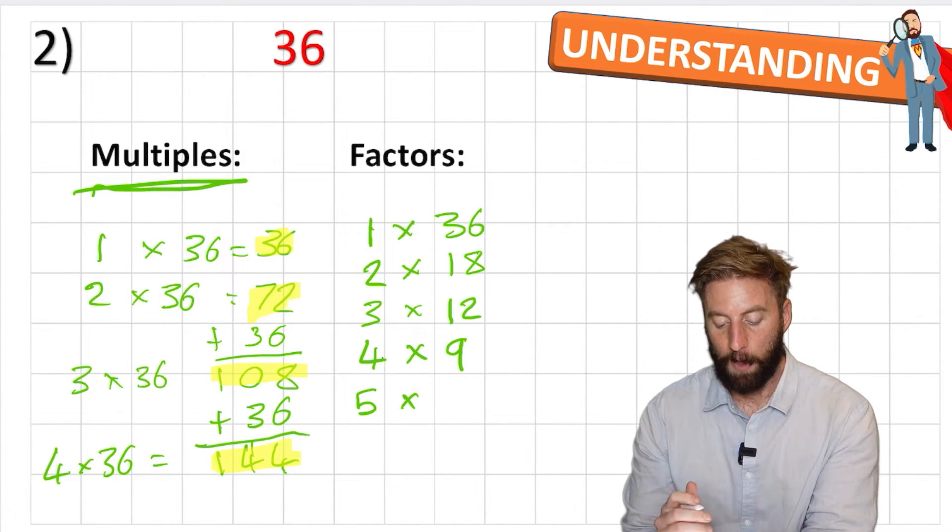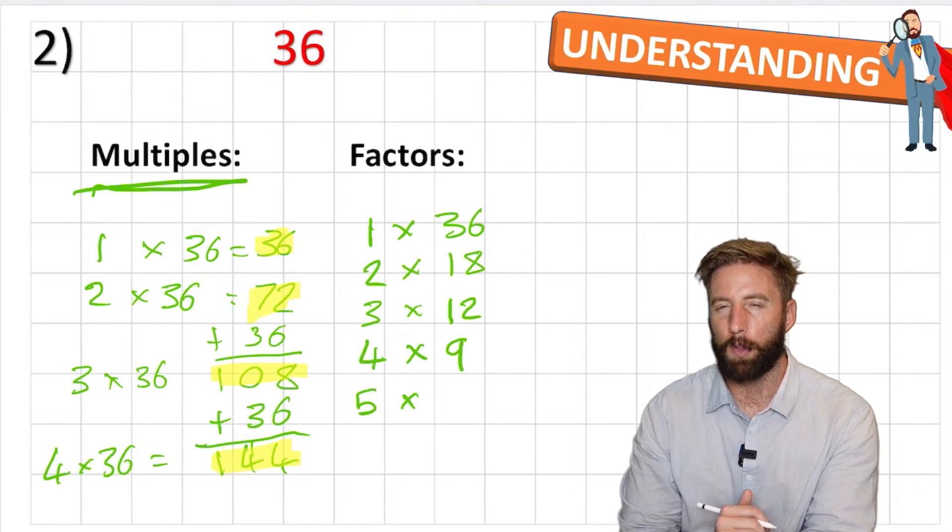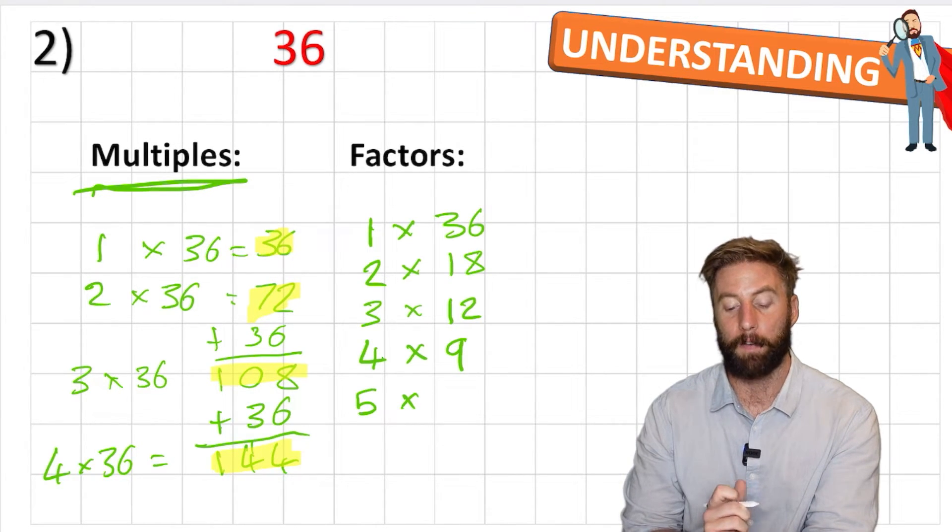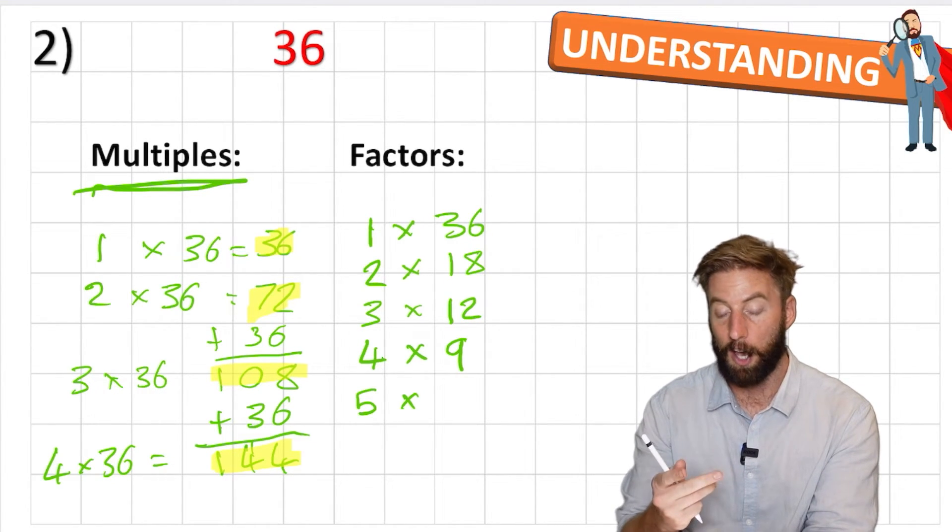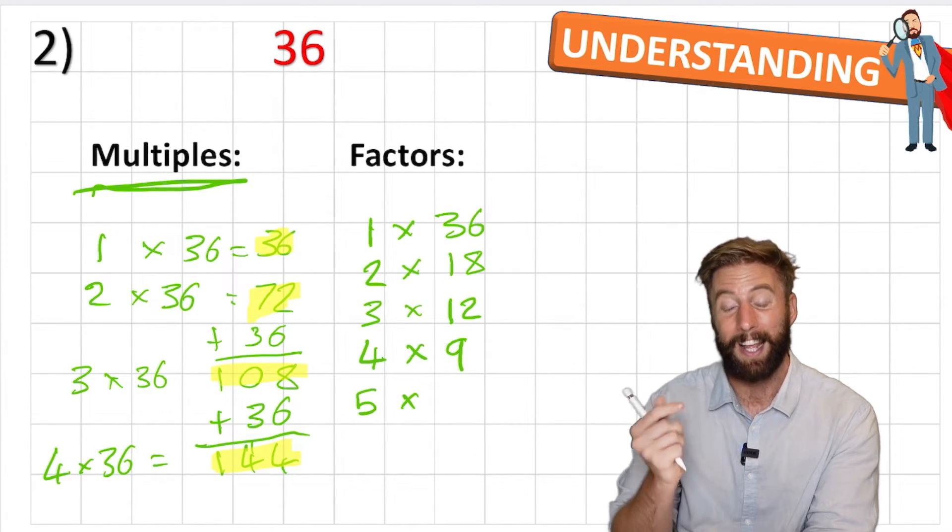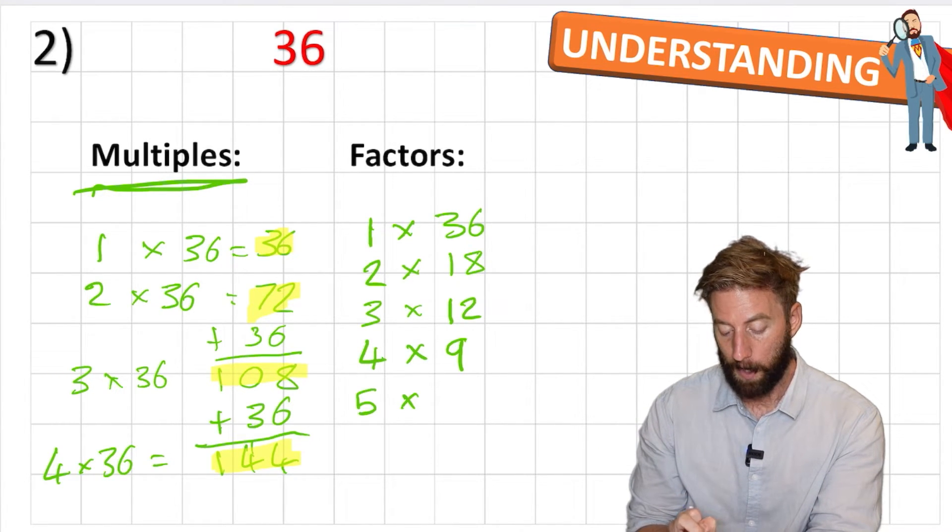Okay, let's check 5. 5 times something equals 36 or 36 divided by 5. No, I don't think it does. Let's check by going up in our 5 times table. 5, 10, 15, 20, 25, 30, 35. Close, but not quite. And 40. So no, 5 doesn't work. And that's okay. I can just get rid of it.